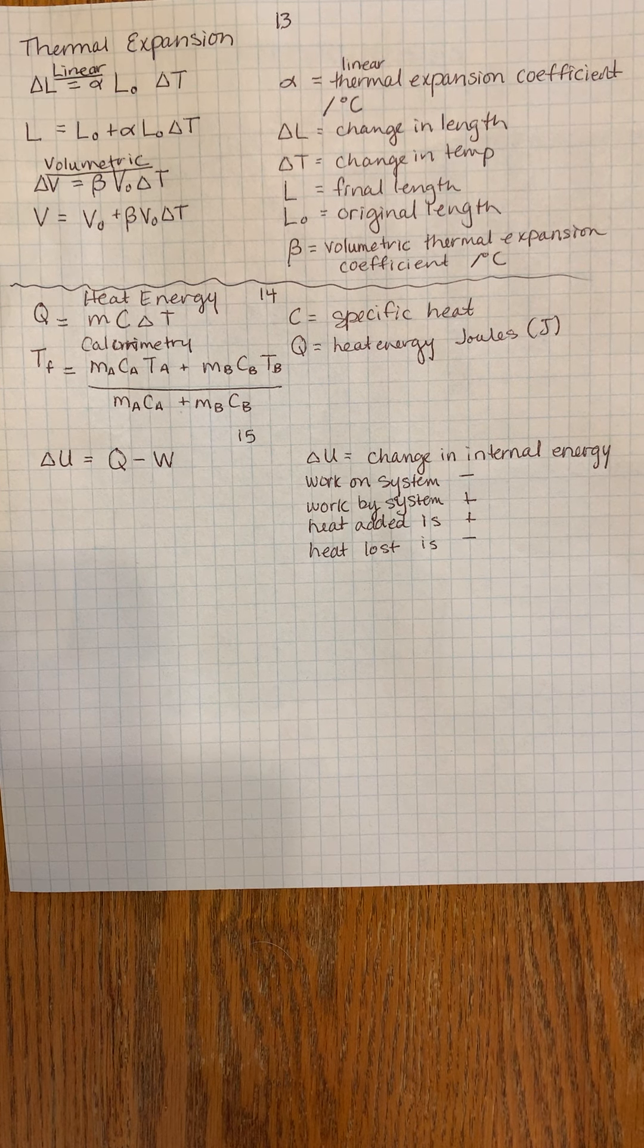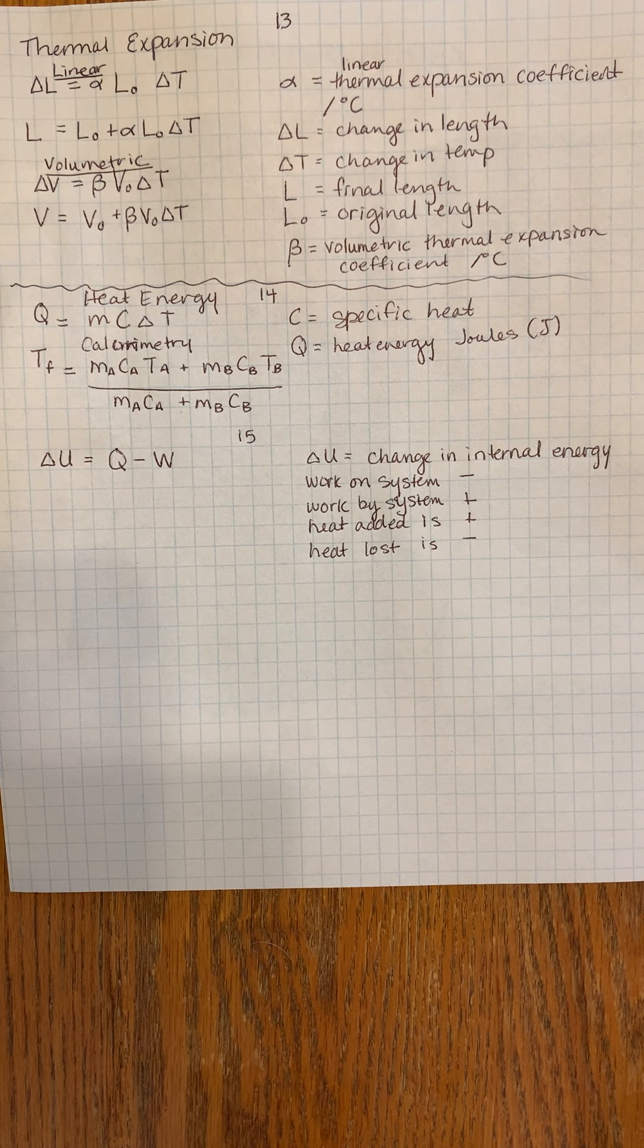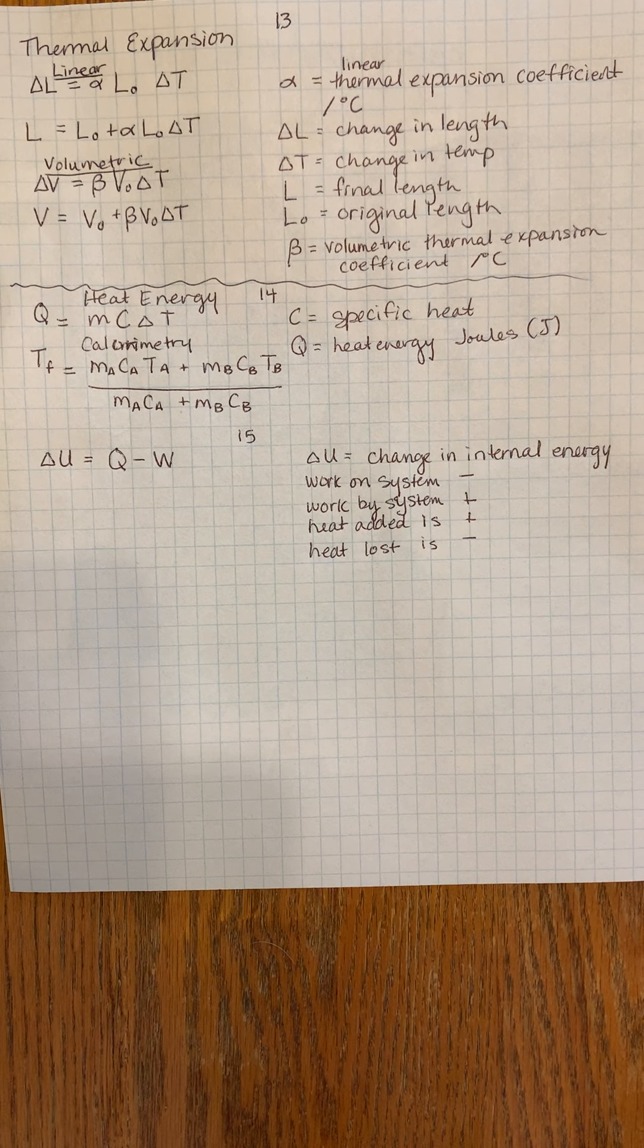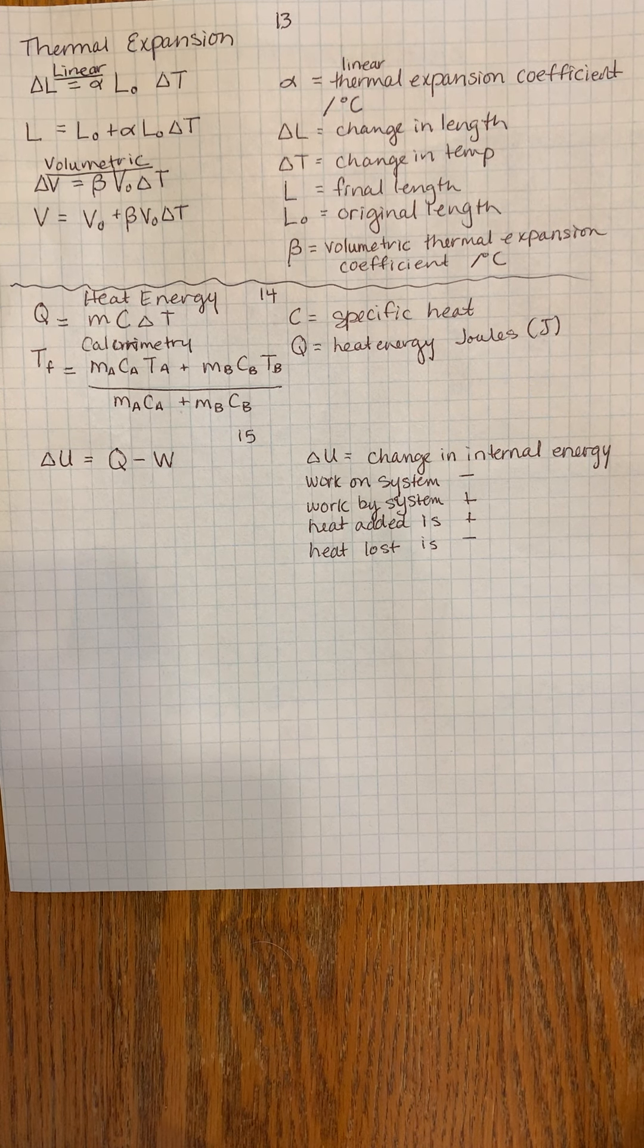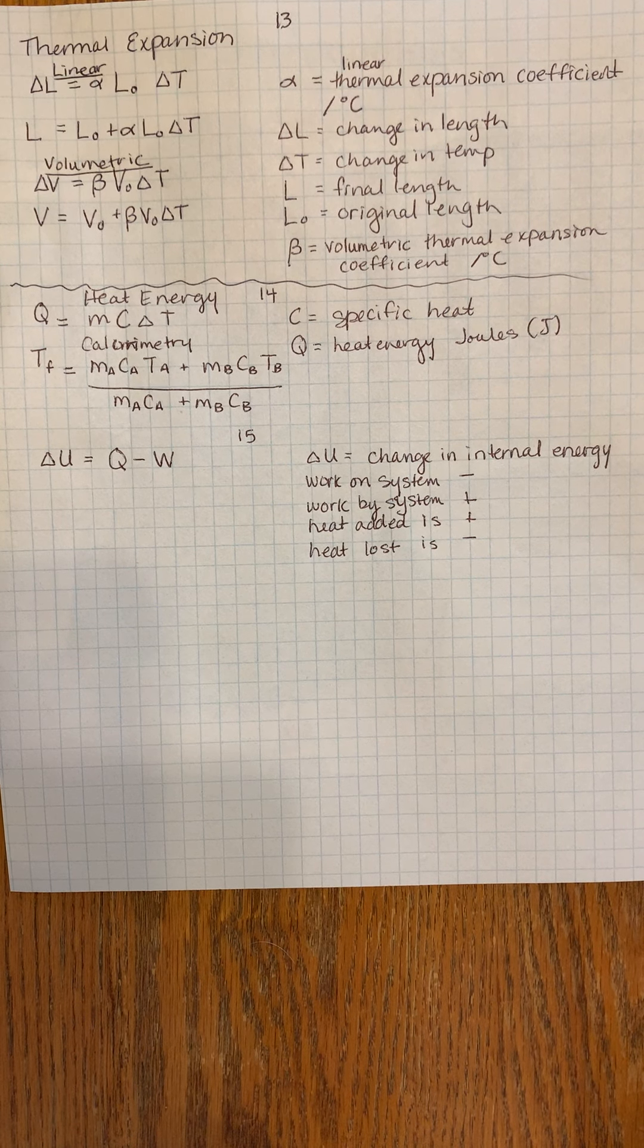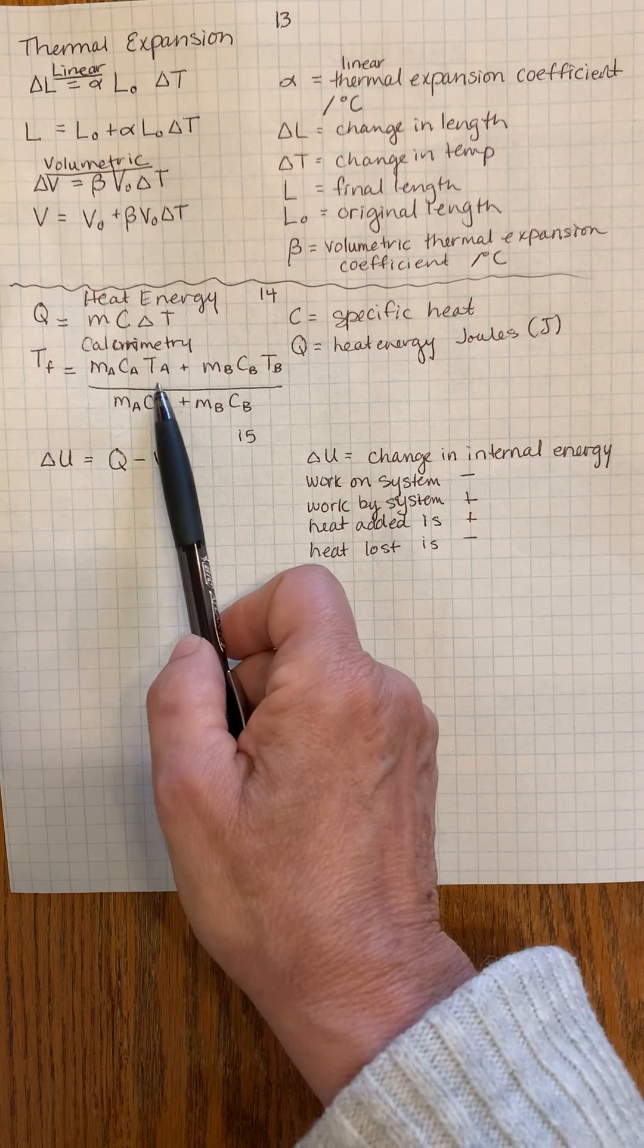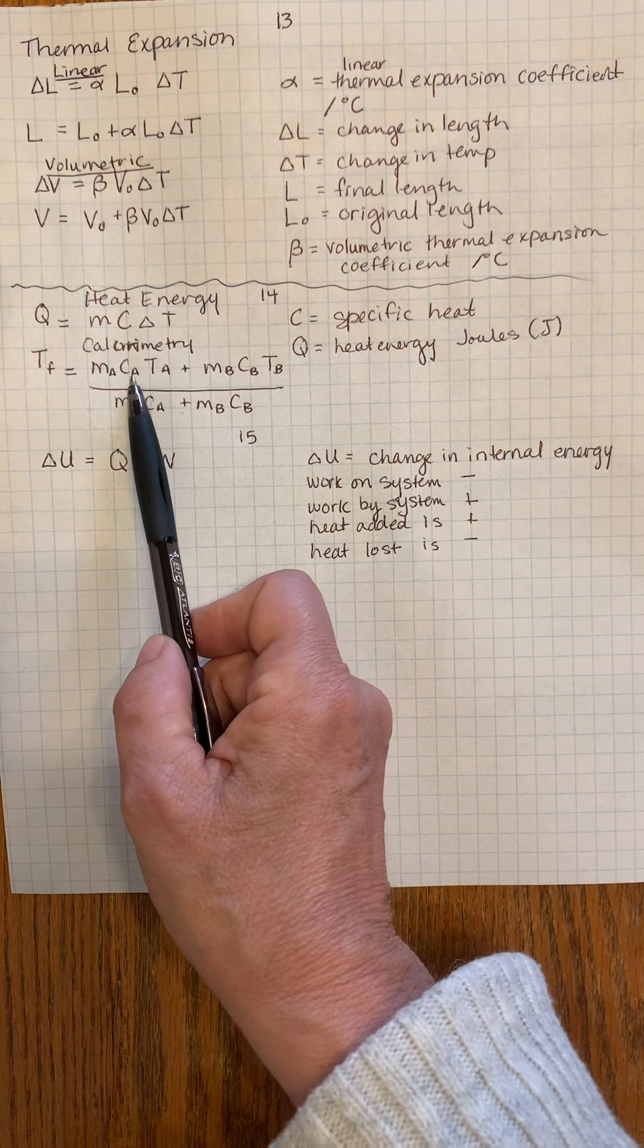Calorimetry is when you bring two different substances together at different temperatures and masses. You put them together and then you want to find out what is the equilibrium temperature, or what will they settle on once you bring them into contact with each other. You'll need to take consideration of different masses and different specific heats.